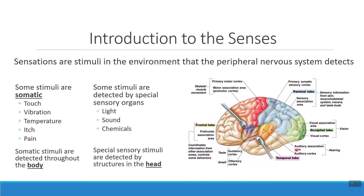In the temporal lobe, I have my centers for auditory sensations — the process of hearing. When I look into the insula, that's where we do the processing of tasting or smelling, here in the temporal lobe. Both taste and smell are actually the detection of chemicals. So big picture, when we talk about senses, we have a lot of different somatic sensory information that we collect, and very specific special sensory information as well.